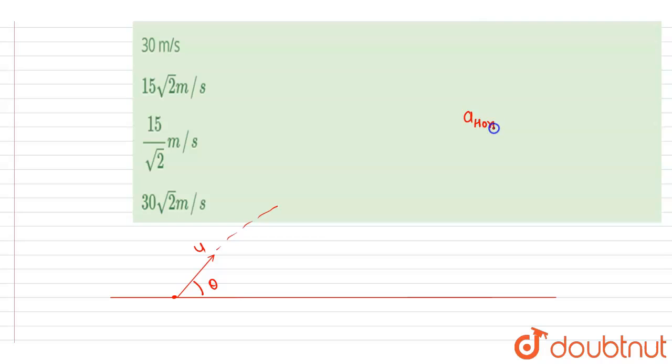Acceleration in horizontal direction is 0, right? Because g is only the acceleration here and that is in downward direction. So at any instant, if you see, the component of velocity along horizontal will be same.